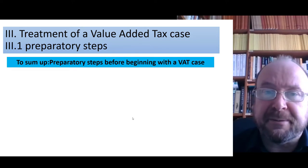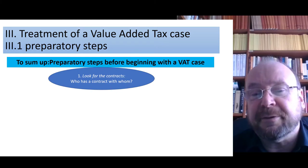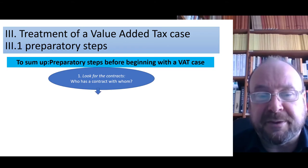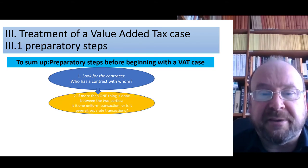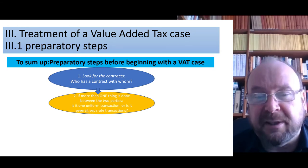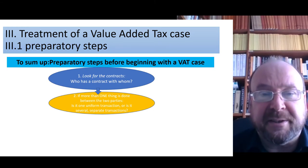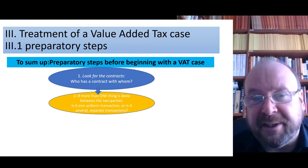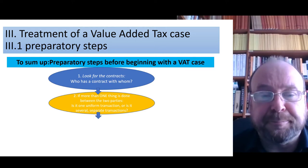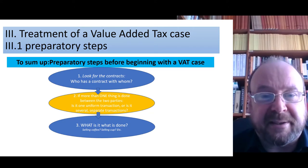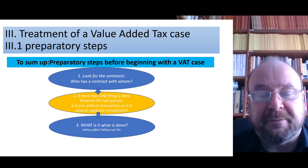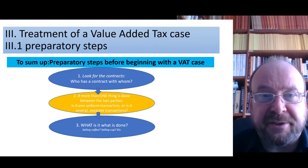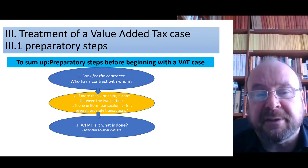To sum up, the steps you have to think about before beginning with the case solution are: first, who has a contract with each other person; then, if more than one thing happens between the two parties you have sketched, is it one single uniform transaction or several separate transactions — do I have one case, or two, or three? Then: what exactly is done here — is it selling a coffee, selling a cup, or something completely different? These are the questions you have to answer before you can start a case.